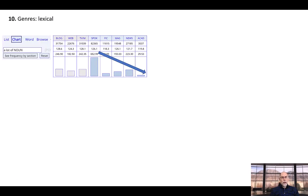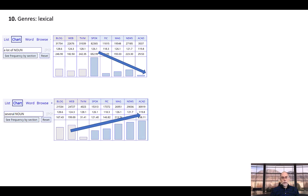In terms of lexical variation across genres, suppose that a non-native speaker uses the phrase a lot of noun. She might not realize that a lot of is much more frequent in informal genres like spoken, but that it wouldn't really be appropriate for formal academic English. The phrase several noun, on the other hand, is used much more frequently in academic. So if she wants the paper to sound more formal, she should probably use several noun instead of a lot of noun.